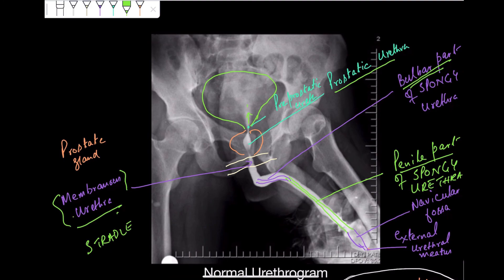I hope by now you understand how to read a urethrogram and identify each individual part of the urethra. In case of any injury or trauma, you can see the extravasation or leakage of the contrast material where this tube of the urethra has been damaged.